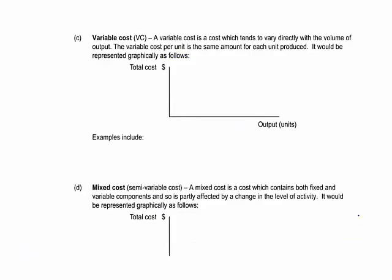Some costs change every time a unit is produced — these are variable costs, directly related to the number of units being produced. The variable cost per unit is deemed to be constant, producing a graph that goes through the origin. The more units produced, the more costs rise. Examples of variable costs include raw materials — for every study text produced a certain amount is spent on paper — and variable labour costs.